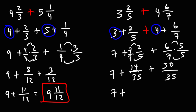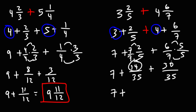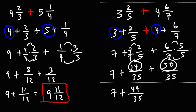So now that the bottom numbers are the same, we can add the top numbers. So 14 plus 30 is 44. Notice that 44 over 35 is an improper fraction.